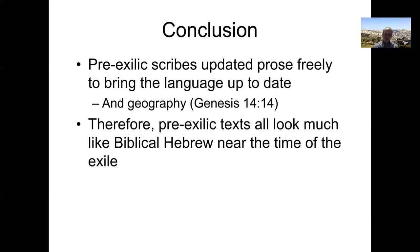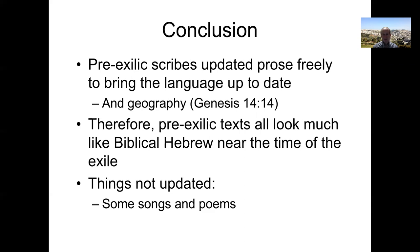As a result of that kind of update, the pre-exilic texts in the Bible — whether you're reading Genesis or 2 Kings — they all look a lot, not exactly, but they look a lot like biblical Hebrew did near the time of the exile. Exceptions: there are a few things not updated, like some songs and poems that don't show that same sort of update. Also names — some of the names, particularly in Genesis, are clearly supposed to have a particular meaning, like Abraham is supposed to mean 'father of a multitude.' But that doesn't exactly match the way you would say 'father of a multitude' in later Hebrew. You can't change a name, so some things in the language like that have stayed the same.